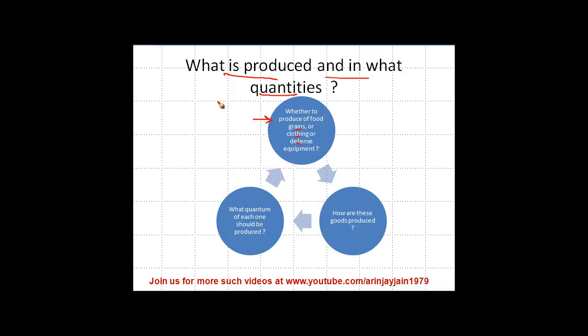This is what we discussed in our earlier video also. So the first question is the choice of the item that has to be made. Because the resources which you have are limited, you obviously need to make a choice as to whether you want to produce food grains or clothes or defense equipment.